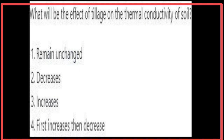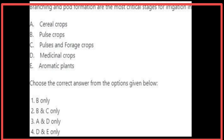The effect of tillage on the thermal conductivity of soil: tillage decreases the thermal conductivity of the soil. Branching and pod formation are the most critical stages for irrigation in pulse crops — that is, B only.